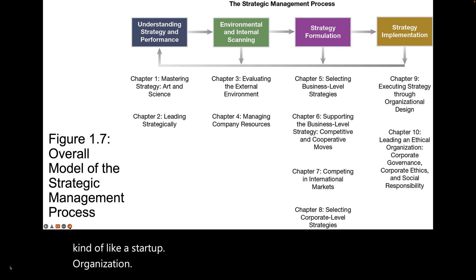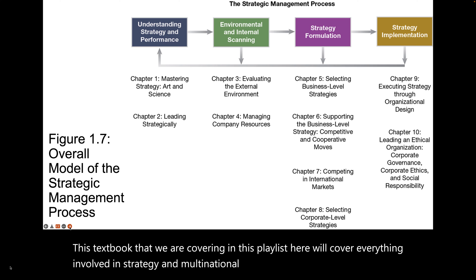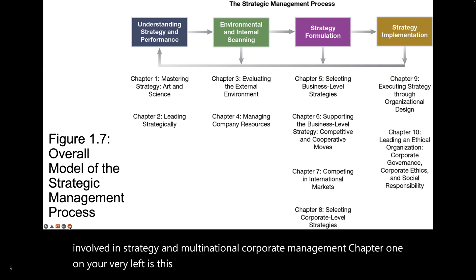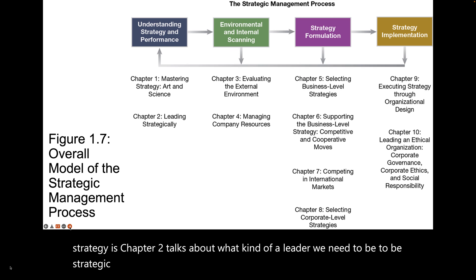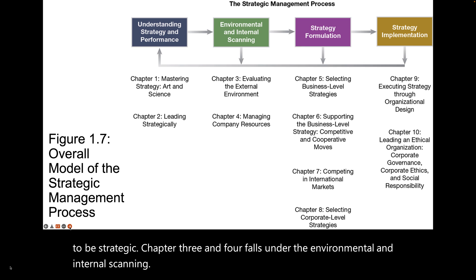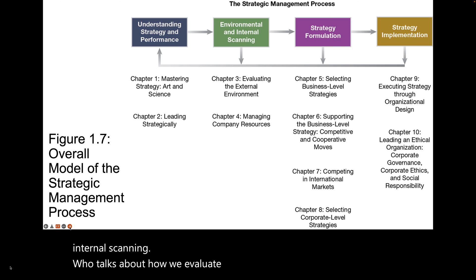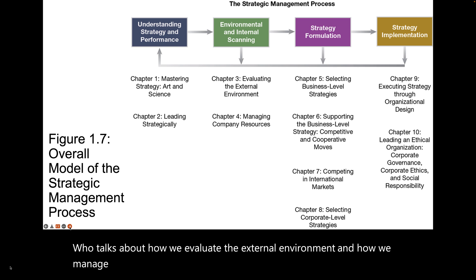This textbook covers everything involved in strategy and multinational corporate management. Chapter one, where we are now, is where we learn about what strategy is. Chapter two talks about what kind of leader we need to be to be strategic. Chapters three and four fall under environmental and internal scanning, covering how we evaluate the external environment and how we manage our resources internal to our company.